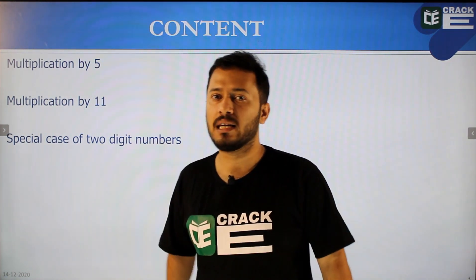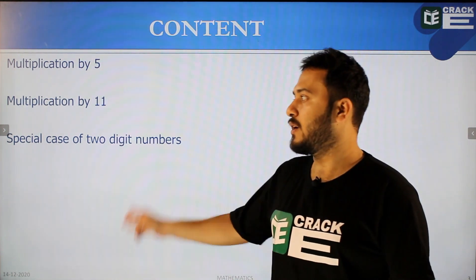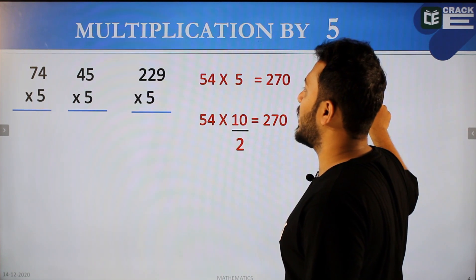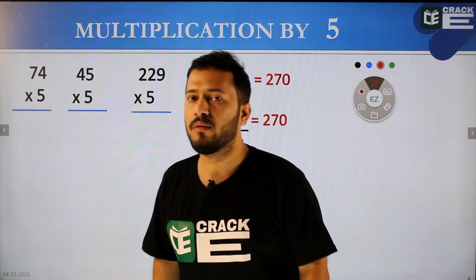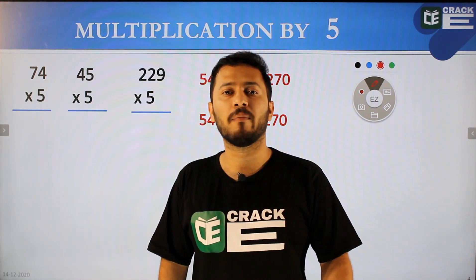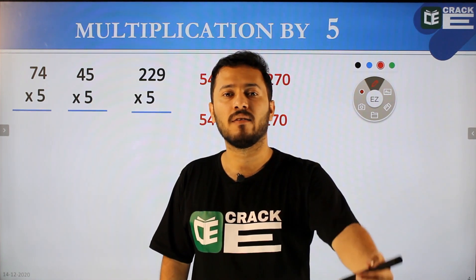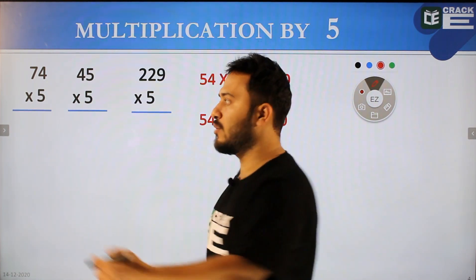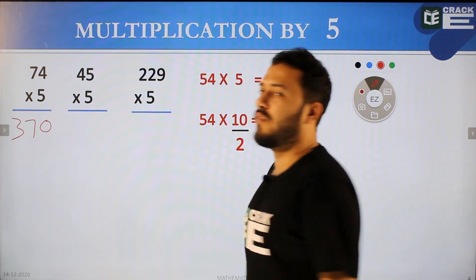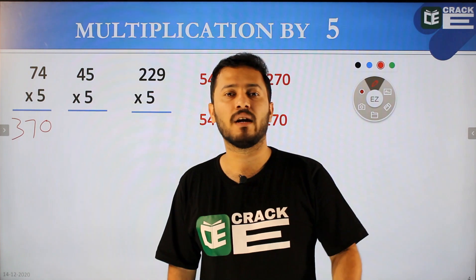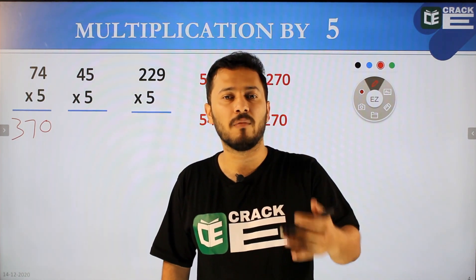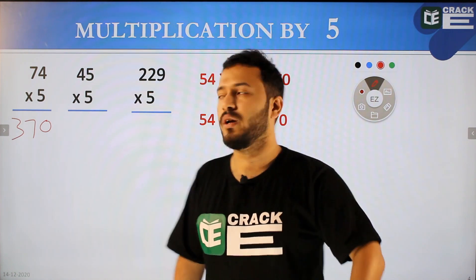Let's look at multiplication by 5. 74 divided by 2 is 37, so 74 multiplied by 5 is 370. 45 divided by 2 is 22.5 — for the decimal, multiplication by 10 gives 225.